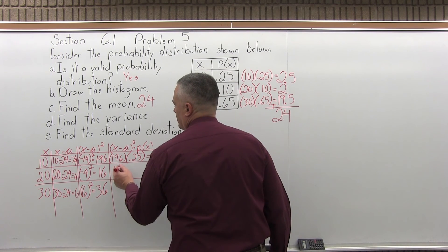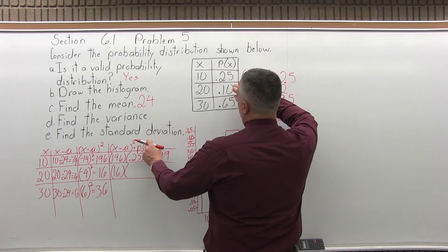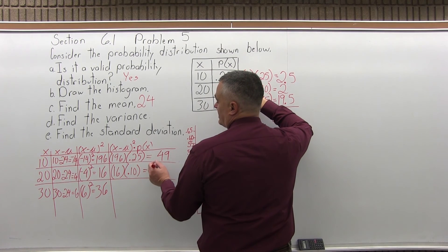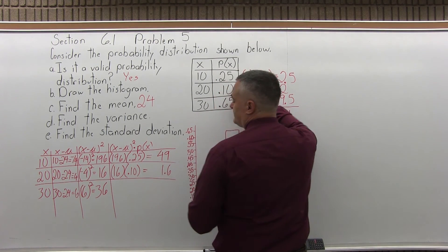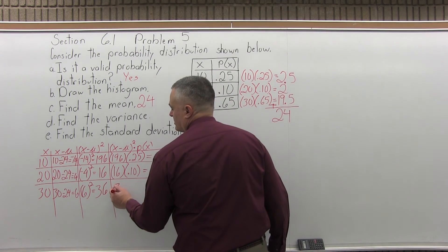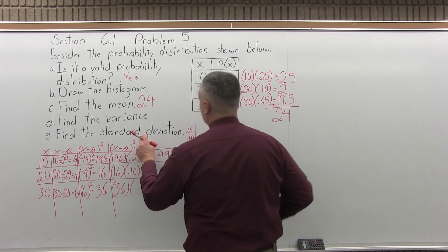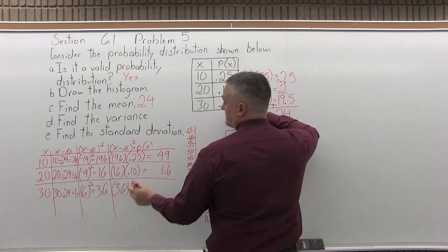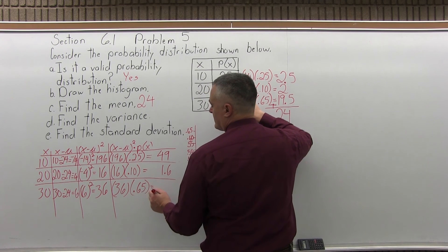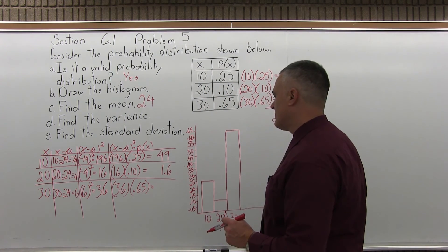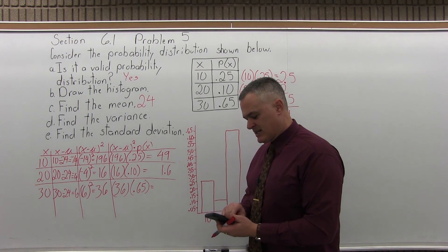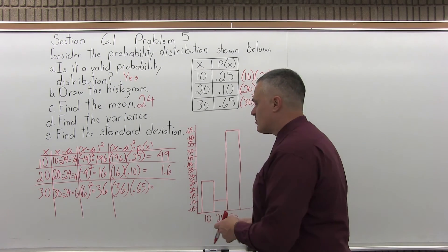So in our middle row, the x minus mu second power was 16. And I'll multiply that times the probability of x from the middle row. It's 0.10. So 16 times 0.10 is 1.6. And finally in the bottom row, the x minus mu second power result was 36. So I'll multiply that 36 times the probability of x from my bottom row. So my probability of x here is 0.65. And that one I might have to do on a calculator. So let's see. 36 times 0.65 is 23.4.